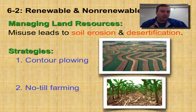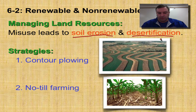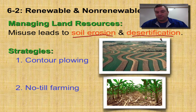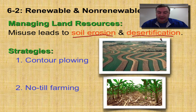So how do we manage our land resources? Misuse of land will lead to soil erosion and desertification. Soil erosion is when wind and water push away the topsoil. Topsoil is the part of the soil where all the nutrients are available for the plants. Desertification is when you turn what was good land into a desert, and it's very hard to get crops to grow in a desert.